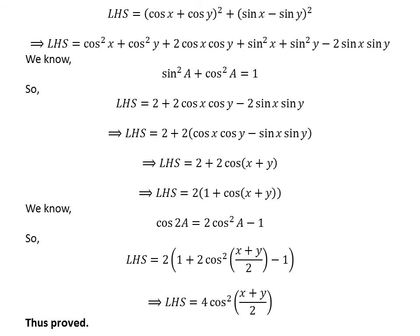As 1 and minus 1 cancel out each other, the left-hand side of the equation is equal to 4 times square of cosine of x plus y upon 2, which equals the right-hand side of the given equation. So, we have proved the given equation.